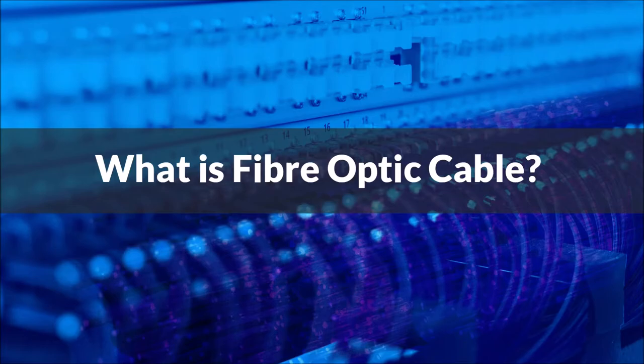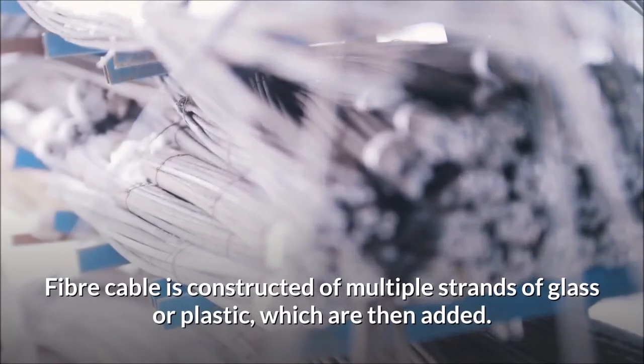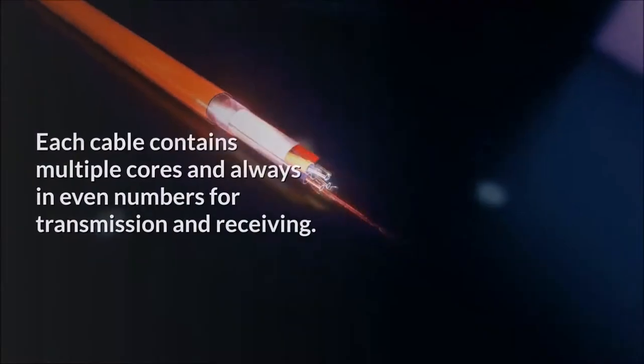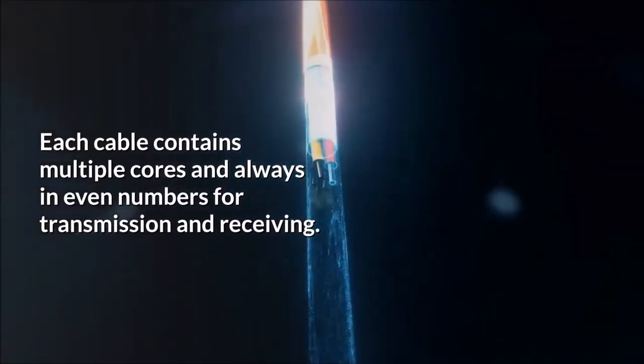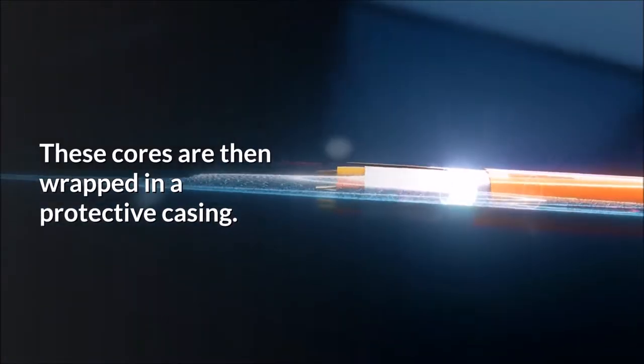What is Fiber Optic Cable? Fiber cable is constructed of multiple strands of glass or plastic. Each cable contains multiple cores and always in even numbers for transmission and receiving. These cores are then wrapped in a protective casing.